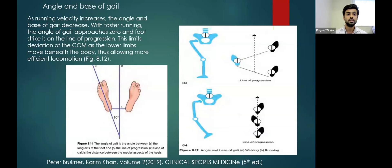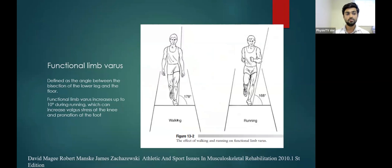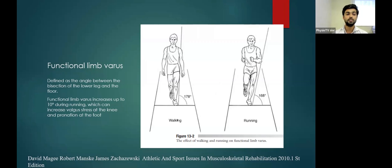This is normal physiological motion. Why does this angle and base of support decrease and why does the foot strike on the line of progression? This is because of functional limb varus, defined as the angle between the bisection of the lower leg and the floor. While running, functional limb varus increases up to 10 degrees, which can increase valgus stresses at the knee and pronation of the foot. Normal physiological functional limb varus is only 10 degrees. If it increases more than 10 degrees, it can be pathological and create injuries to the lower leg.